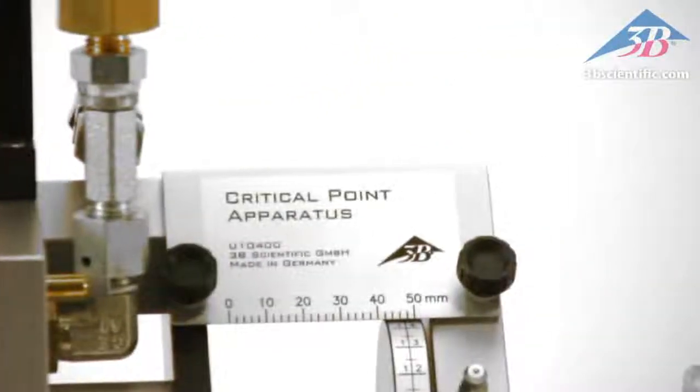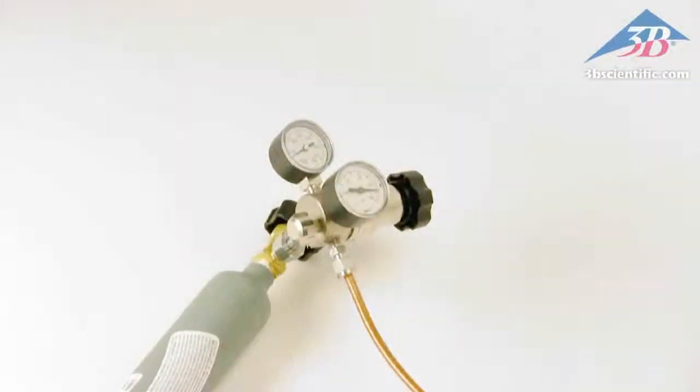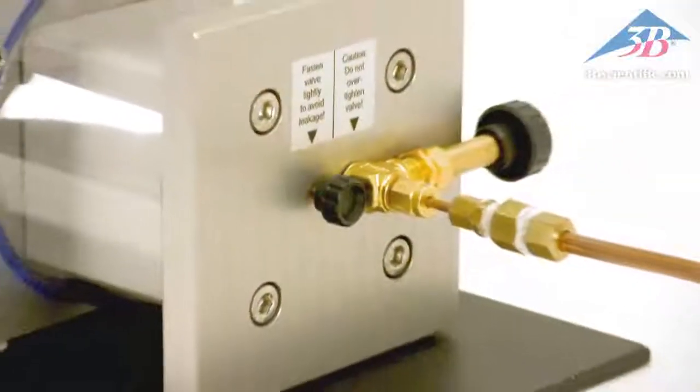The critical point apparatus is unique in that it does not use mercury. The apparatus uses sulfur hexafluoride, which is a colorless, odorless, non-toxic, and non-flammable gas.